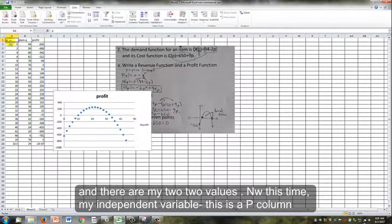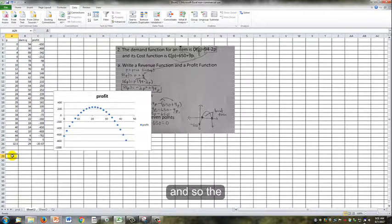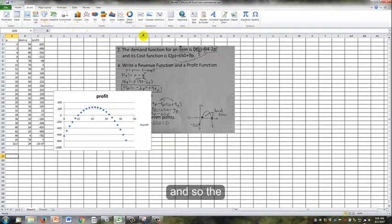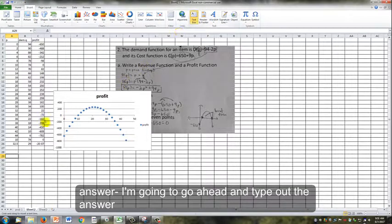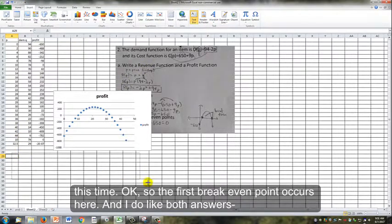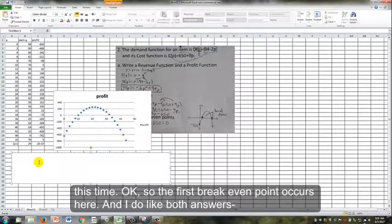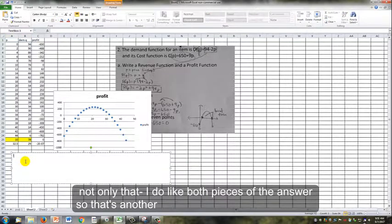Now this time, my independent variable, this is a p column. I'm going to go ahead and type out the answer this time. The first break-even point occurs here. I do like both answers. Not only that, I do like both pieces of the answer.